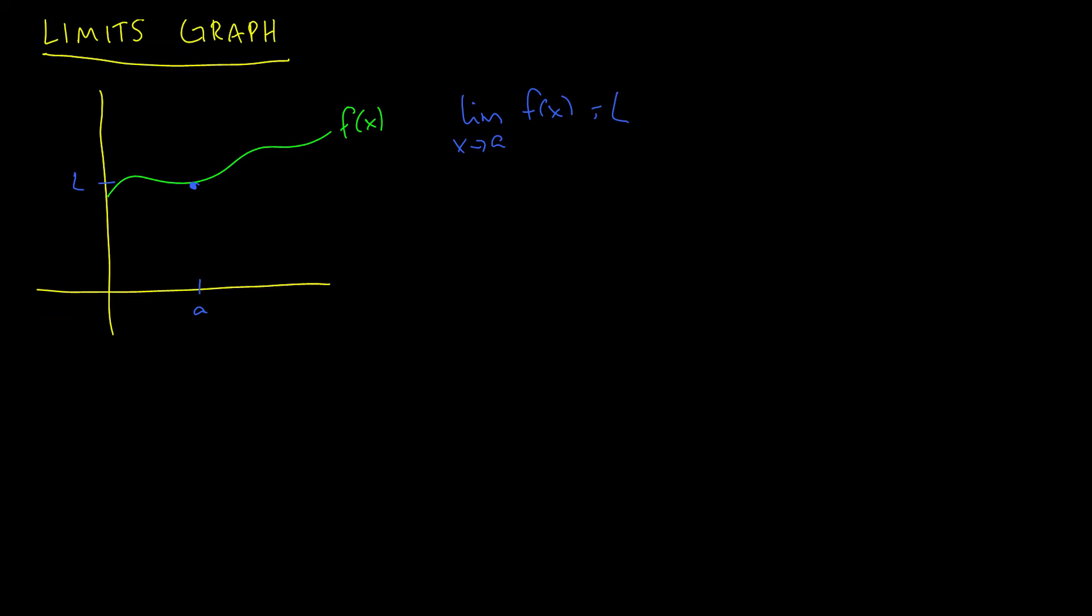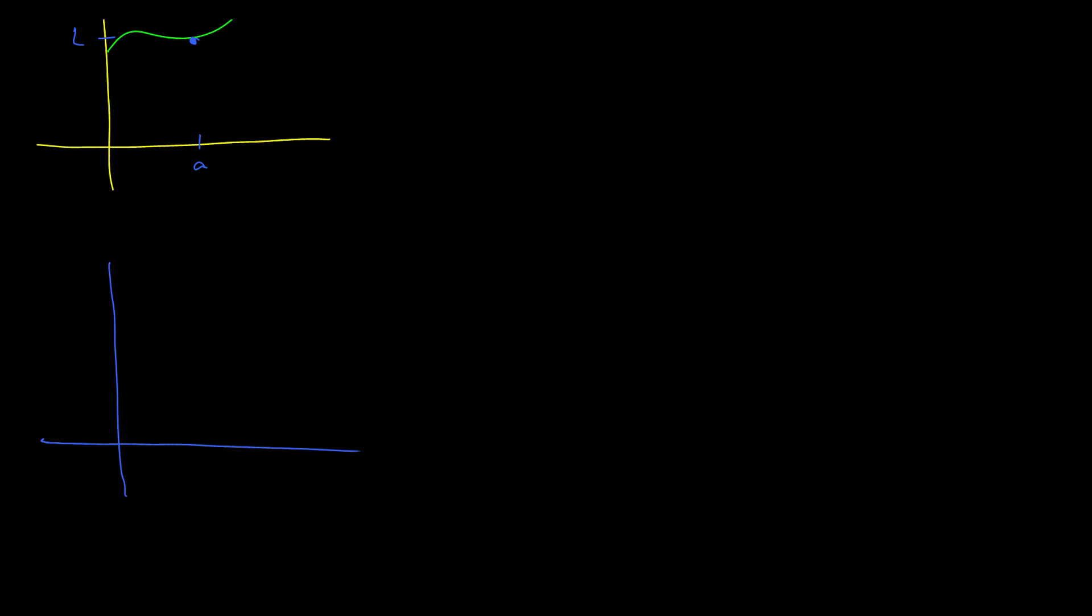Suppose we have a discontinuous graph. So what this means is that it looks like this, and it has a hole at this point, but it keeps going on from this point, and we'll call this the point four, and it's actually defined up here. When we get to four, it's defined at this point ten, which is interesting. So we can say that f of four is equal to ten.